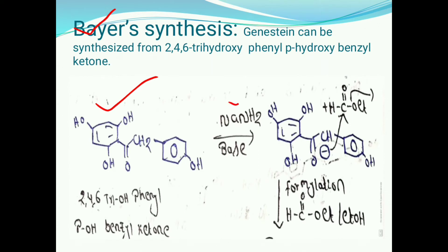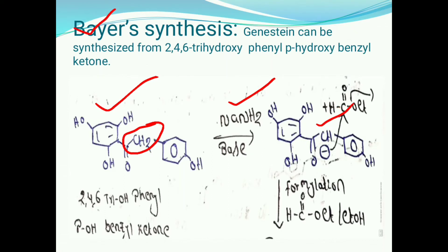The formula of sodamide is NaNH2. In the presence of sodamide, the CH2 group loses H+ ion and is then converted into CH⁻ ion. Here sodamide NaNH2 acts as a base — it removes the H+ ion from the CH2 group, converting CH2 into CH⁻.